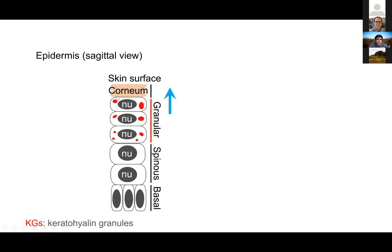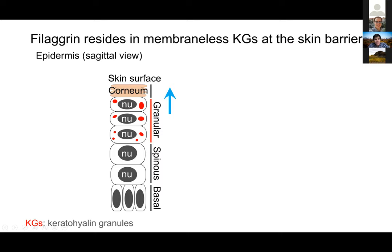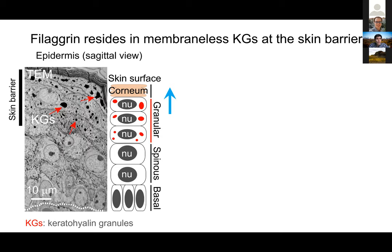What was intriguing is that the granular layer was known as such because of the presence of keratohyalin granules, depicted in red. These keratohyalin granules are exactly where filaggrin was known to reside. Here we had a case where we predicted UCST-type phase behavior, and we find that the protein actually resides in really intriguing membraneless granules within the skin. In TEM, you can see this part of the skin with black deposits accounting for these crystalline granules, followed by the corneum. People didn't really know what these granules did in skin.